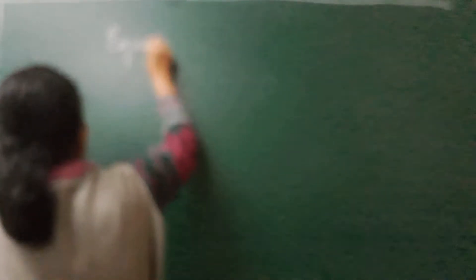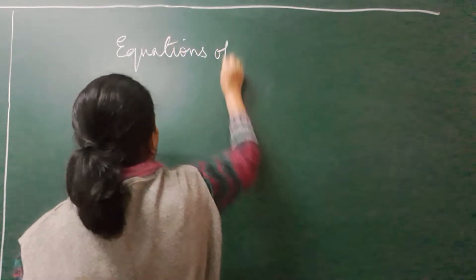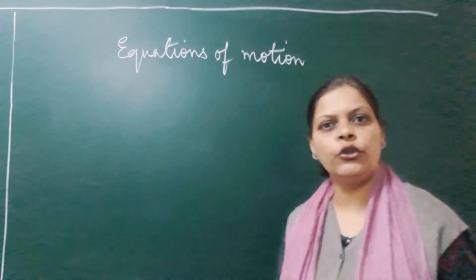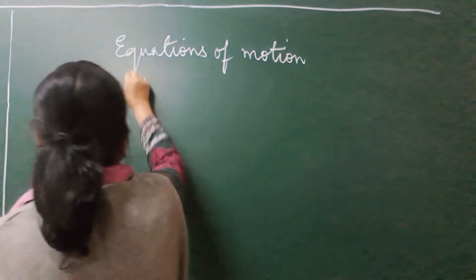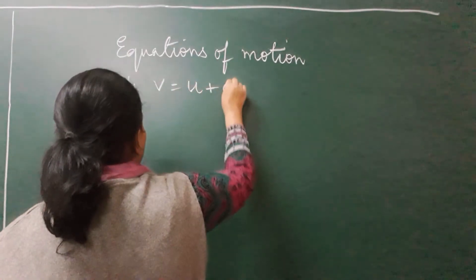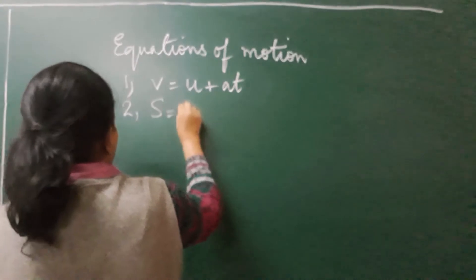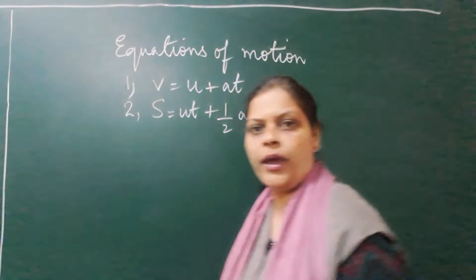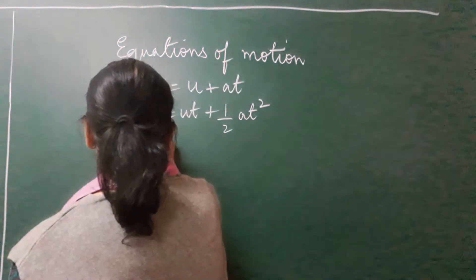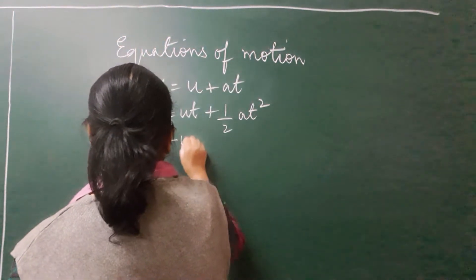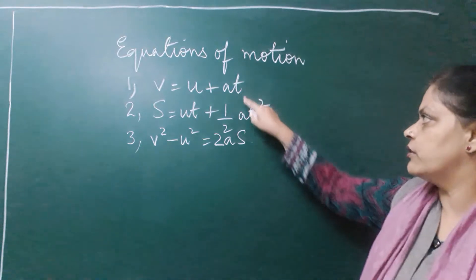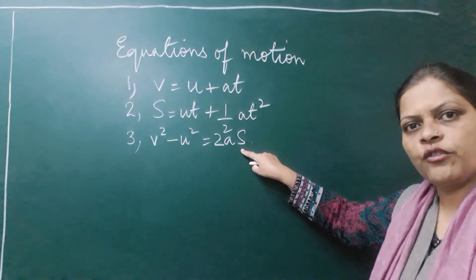These numerical problems are based on equations of motion. There are 3 equations of motion which I am going to use to solve the numerical problems. The first one is V = U + AT. The second one is S = UT + ½AT². And the third one is V² − U² = 2AS. These are known as the 3 equations of motion.